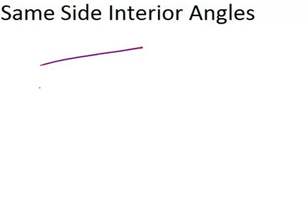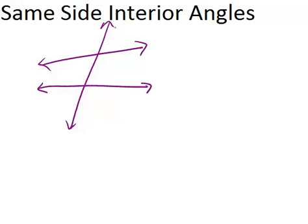If we have two lines that are intersected by a transversal, two pairs of same side interior angles will be created.